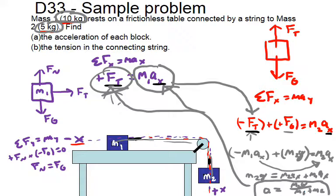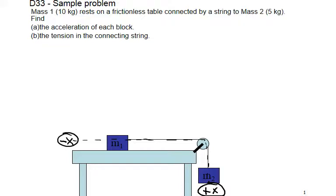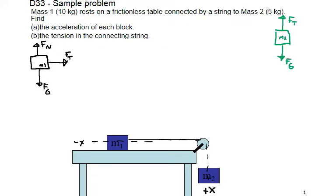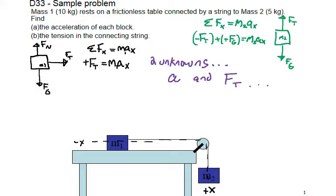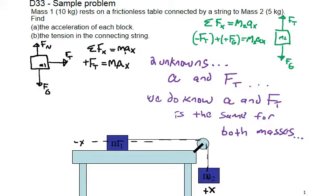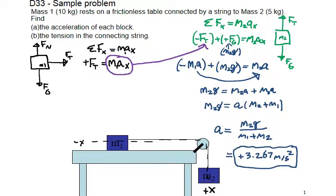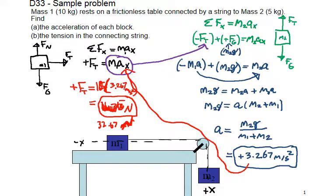By substituting in the values, we should get an acceleration of 3.267 meters per second squared. Placing that back in for acceleration, we get a tension force of 32.67 Newtons.